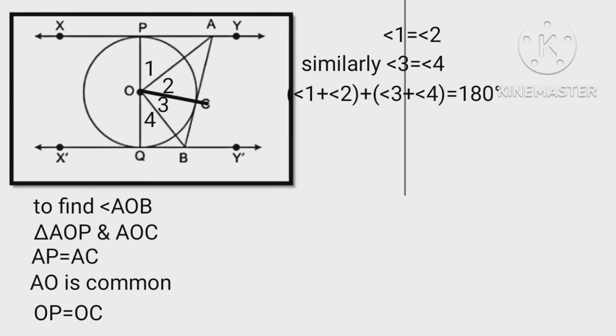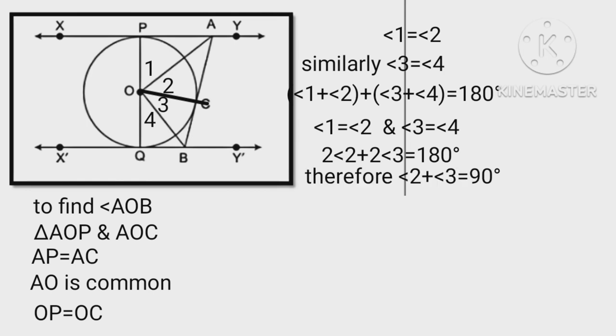Now angle 1 plus 2 plus 3 plus 4 equals 180 degrees. But angle 1 equals 2 and 3 equals 4. Therefore 2 angle 2 plus 2 angle 3 equals 180 degree. Therefore angle 2 plus angle 3 equals 90 degree, implies that angle AOB equals 90 degrees.